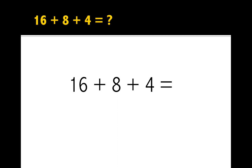So here we've got 16 plus 8 plus 4. We know our friends of 10, and our friends of 10 in this problem I can see are 6 and 4—they make 10. So I'm going to change the order of the numbers to 16 plus 4, then I'm going to add 8.